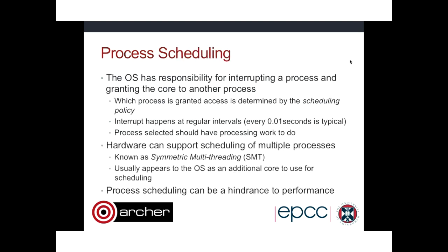Each process is scheduled to run by the OS. It can be tied to a particular core or migrated between cores. On HPC, we tie to a particular core for best performance, because there's a cost associated with migrating a process. The OS is responsible for interrupting processes and granting the core to another process — this is called scheduling. The interrupt happens every so often, usually much less than a second. At that interval, the OS checks what needs to run, what's running, and what's stored, and schedules work accordingly.